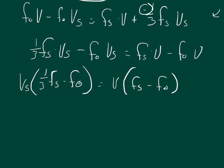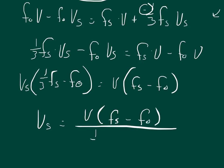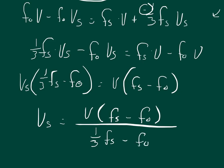Dividing to isolate, we get that the velocity of the source equals velocity times the frequency of the source minus the frequency of the observer, divided by one-third times the frequency of the source minus the frequency of the observer. And so we've solved for the velocity of the source, which is the velocity of the car.